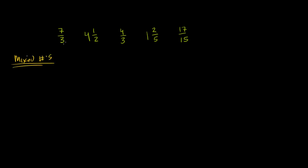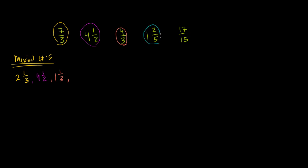If we write them all as mixed numbers: 7/3 — 3 goes into 7 two times with a remainder of 1, so it's 2 and 1/3. Then we have 4 and 1/2, which is already a mixed number. Then 4/3 — 3 goes into 4 one time with remainder 1, so this is 1 and 1/3. Then 1 and 2/5, which is already a mixed number. Finally, 17/15 — 15 goes into 17 one time with a remainder of 2, so this is 1 and 2/15.